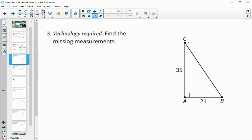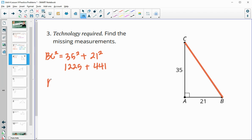Find the missing measurements in number 3. We're going to need to find this hypotenuse again and then find angles B and C. So finding the hypotenuse here, BC squared equals 35 squared plus 21 squared. 35 squared is 1,225 and 21 squared is 441. So add those together and you get 1,666. Then we will square root that and we get 40.8.